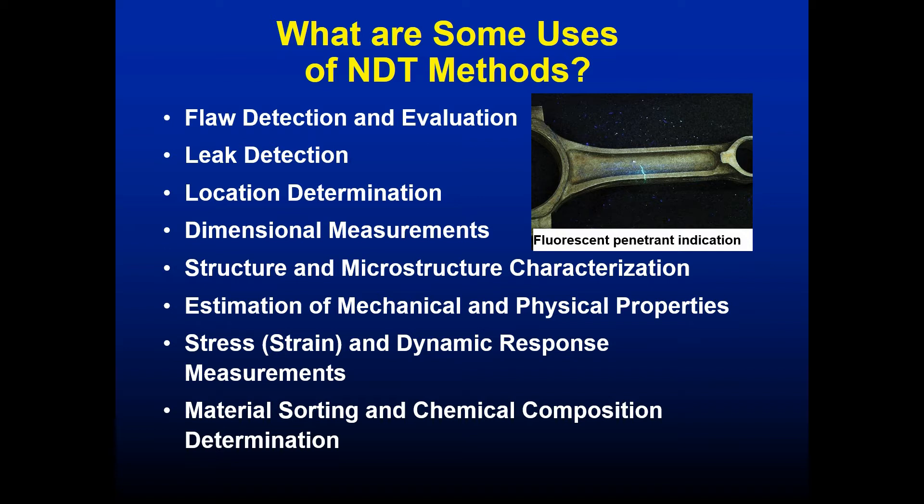For determining steel alloys, a spark test is used — burning a tiny amount of steel and performing spectral analysis of the resulting gas reveals the exact chemical composition of that steel.